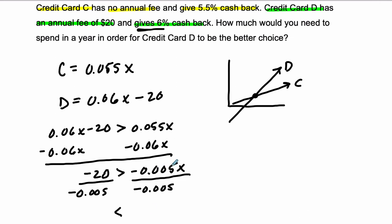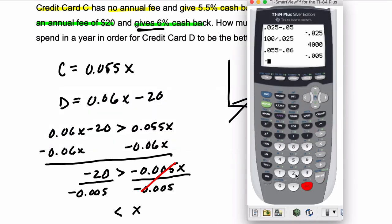And these cancel out, and this is going to be X is greater than this amount, negative 20 divided by negative 0.005.